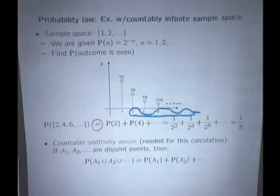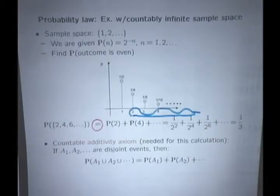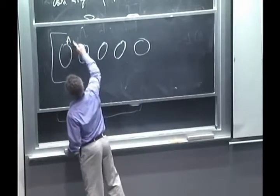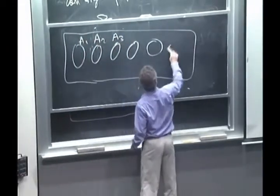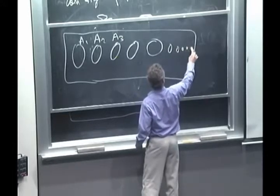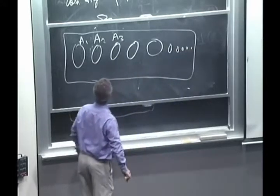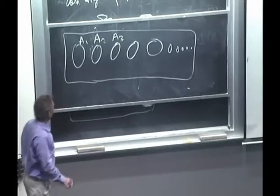So the picture might be such as follows. We have a sequence of sets, A1, A2, A3, and so on. I guess in order to fit them inside the sample space, the sets need to get smaller and smaller, perhaps.